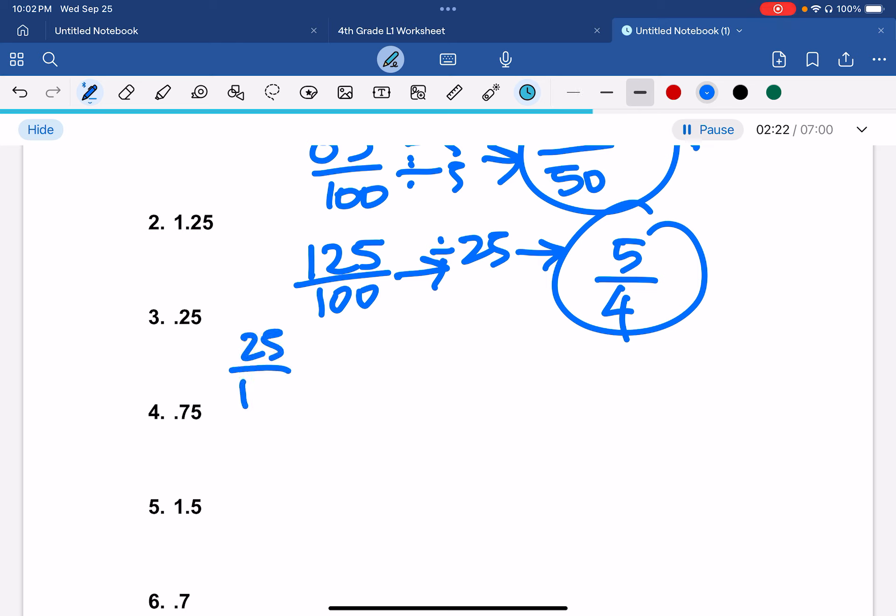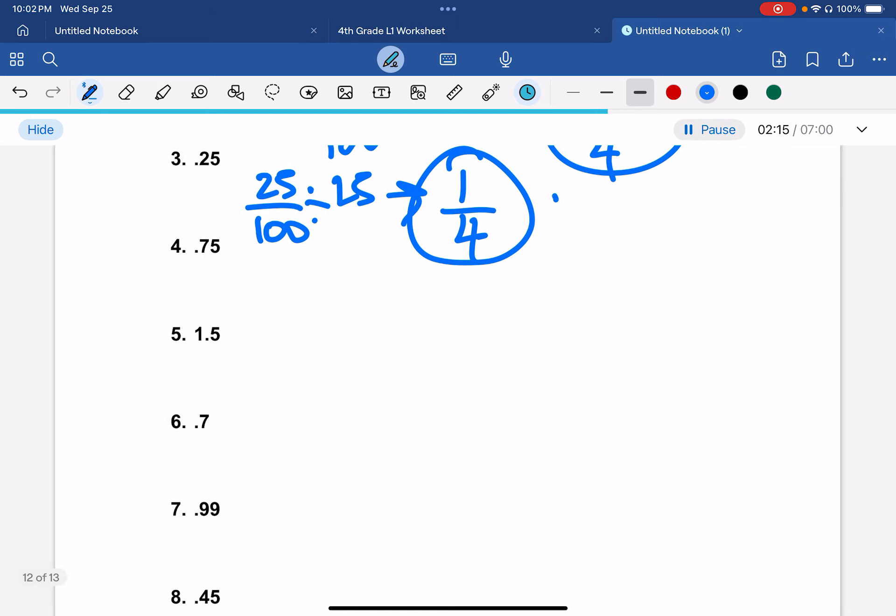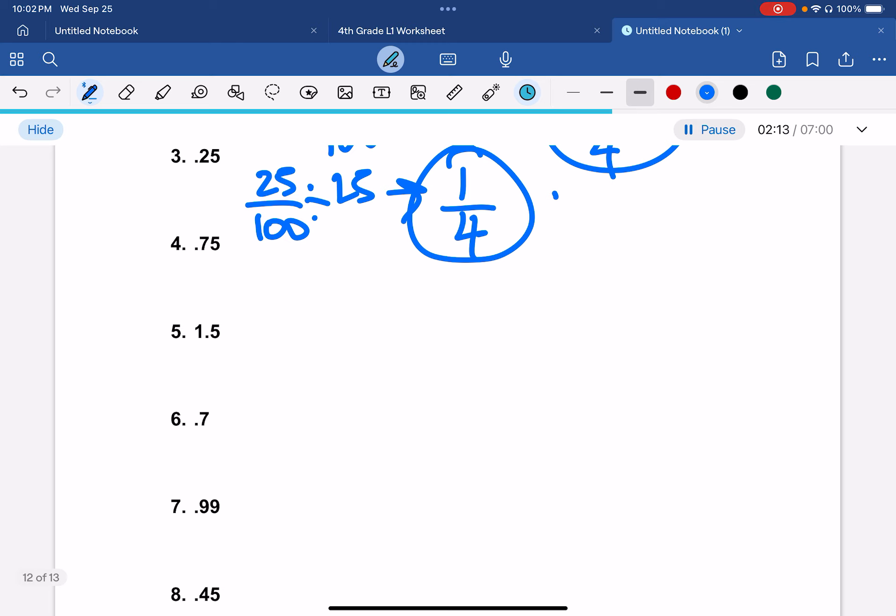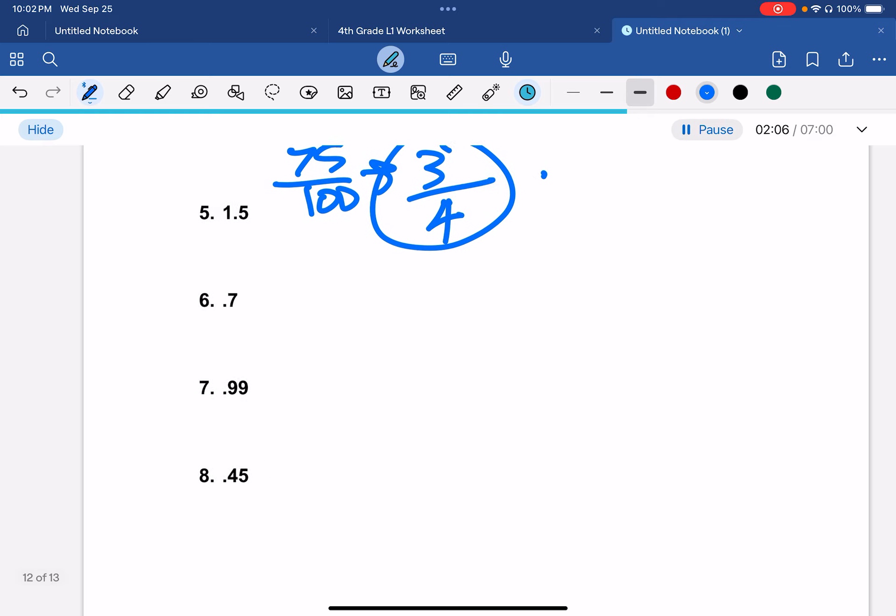So 0.25, we can just divide that by 25 again, which would give us 1 fourth. And then 75, you can just divide by 25 again, which would give us 3 fourths.